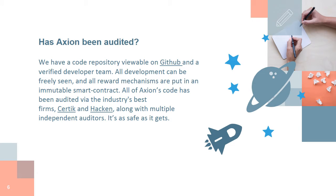Has Axion been audited? We have a code repository viewable on GitHub and a verified developer team. All development can be freely seen, and all reward mechanisms are put in an immutable smart contract. All of Axion's code has been audited via the industry's best firms — Certik and Hacken — along with multiple independent auditors. It's as safe as it gets.